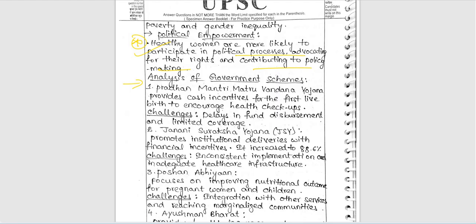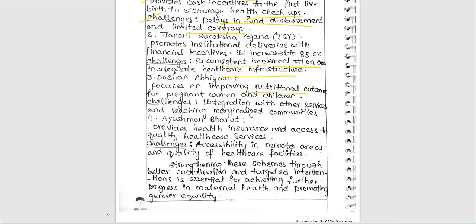In the second part, she analyzed government schemes. For Pradhan Mantri Matru Vandana Yojana, she included the challenge of delays in fund disbursement and limited coverage. For Janani Suraksha Yojana, she noted inconsistent implementation and inadequate healthcare infrastructure. For POSHAAN Abhiyan, the challenge is integration with other services and reaching marginalized communities. For Ayushman Bharat, accessibility in remote areas and quality of healthcare facilities is a key challenge.